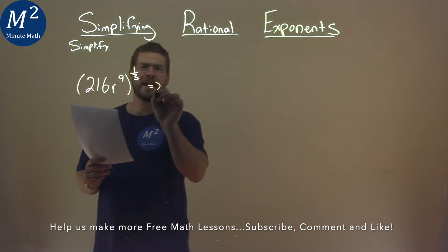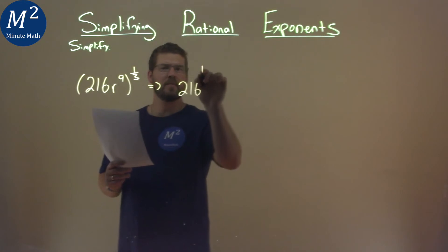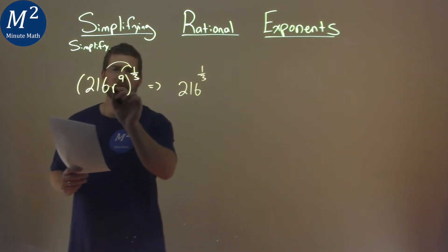Well, we first want to distribute that exponent to both parts. So to do that, we have the 216, and it's going to be to the one-third power. Distribute that over, and we're going to do that here. Remember, separate it by multiplication.